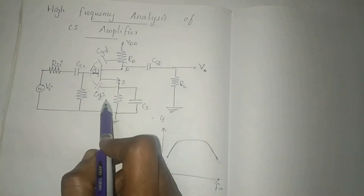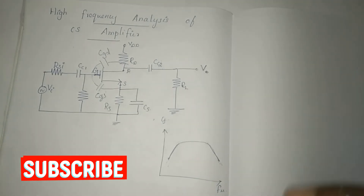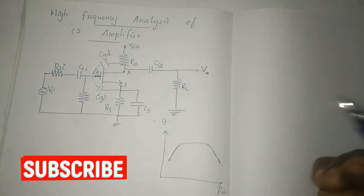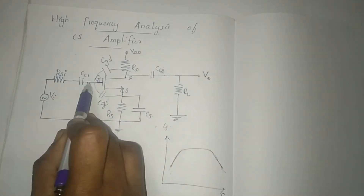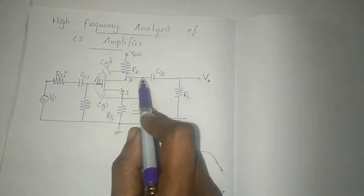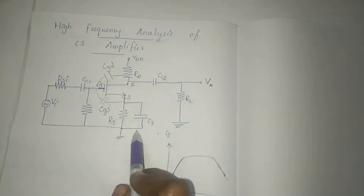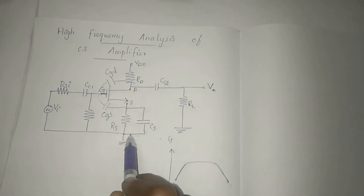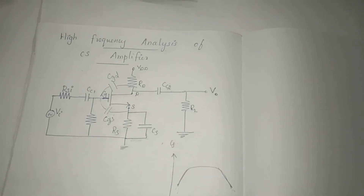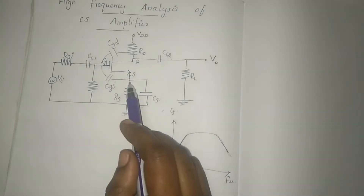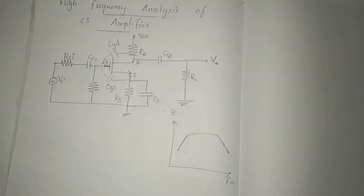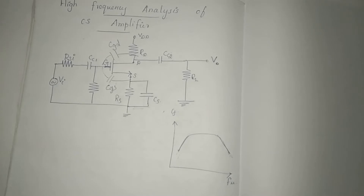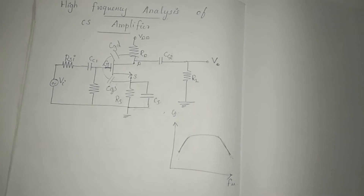For low frequency analysis, we replace the coupling and bypass capacitances with short circuits. When we replace the RS capacitance, it is in parallel and the resistance value becomes very low — essentially zero — so we neglect the RS resistance.